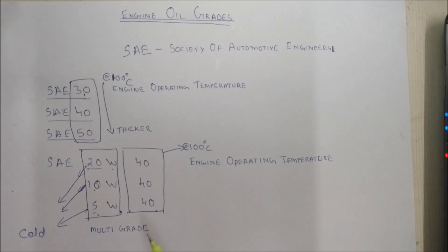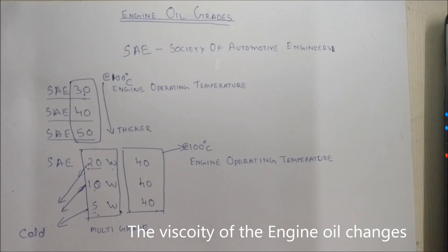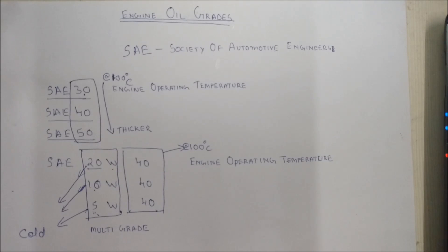It is always advisable to change the engine oil at regular intervals. As the engine is running, combustion gases can slip through the rings and mix with the engine oil. Over time, as these combustion gases mix with the oil, the oil turns a little acidic. As it turns acidic, it starts leaving sludge in the engine components and even starts damaging the rubber portions used as seals. During long periods without an oil change, this acidic engine oil tends to make these rubbers hard.